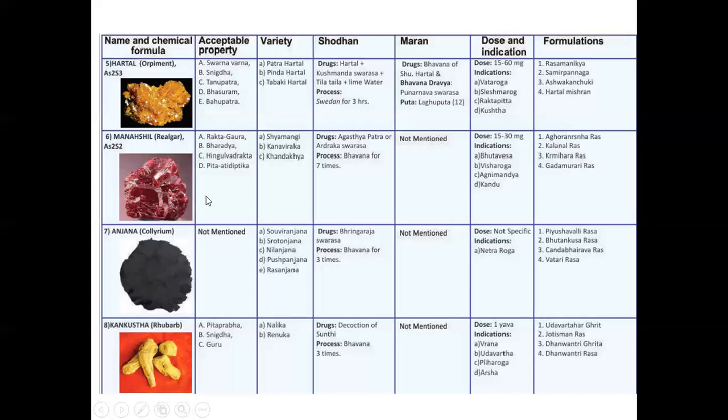Next is Anjana, Collyrium. Actually properties are not specifically mentioned. The varieties are Saviranjan, Srotanjan, then Nilanjan, Kuspanjan and Rasanjan. Drugs for the Shodhana is Bhringarajaswaras. Three times Bhavana are given. Marana is not mentioned about Anjana. Dose is not specific. Indications about ophthalmic or the eye problems. And formulations are Piyushavallini rasa, then Bhutankusha rasa, then Chandra Bhairava rasa and Vatari rasa from Anjana.